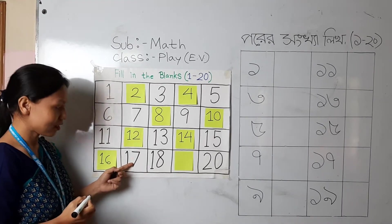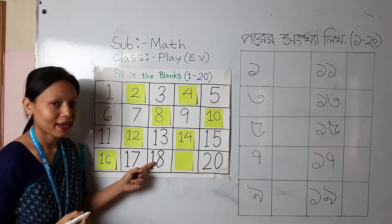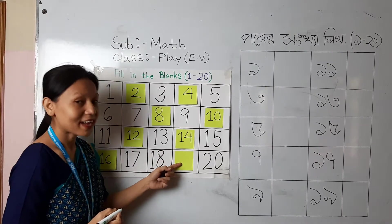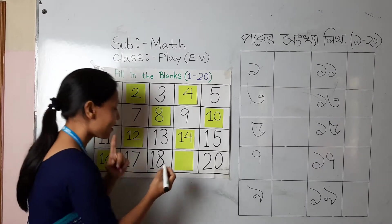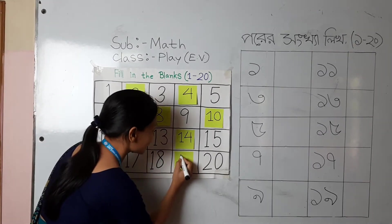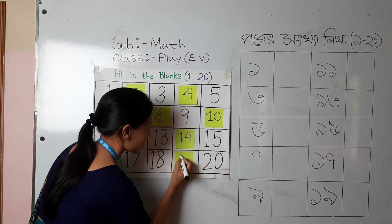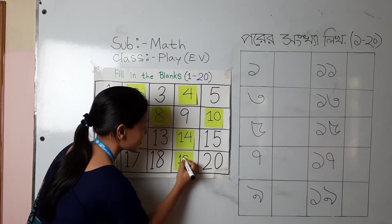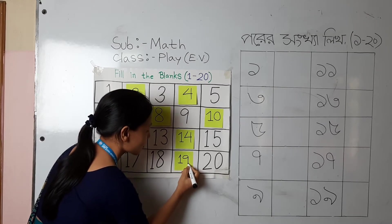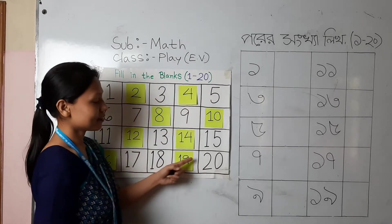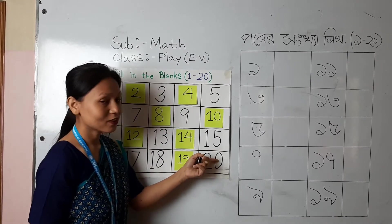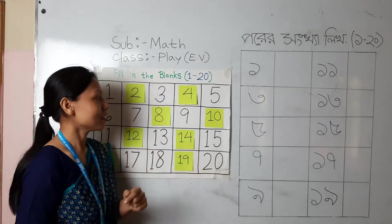Then seventeen. Eighteen. Nineteen — right, number nineteen. Then twenty — two, zero — twenty.